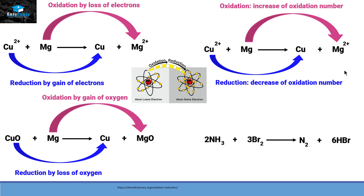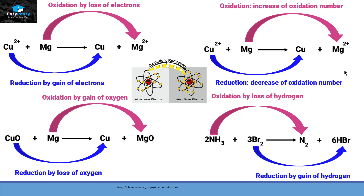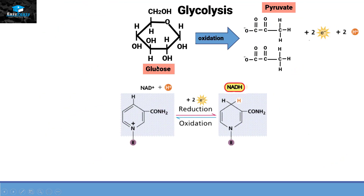The last criteria for determining oxidation or reduction is based on loss or gain of hydrogen. If a compound loses hydrogen, that reaction is called an oxidation reaction, and if it gains hydrogen, it is called a reduction reaction. In glycolysis, glucose converts into pyruvate with the loss of electrons and hydrogen, satisfying both criteria for oxidation.